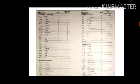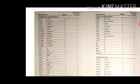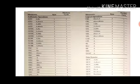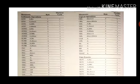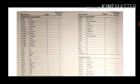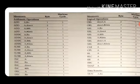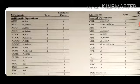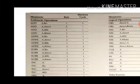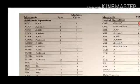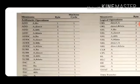This is the appendix chart given by the manufacturer, showing how much machine cycle each instruction will consume. Let me take the very first one — arithmetic operation.